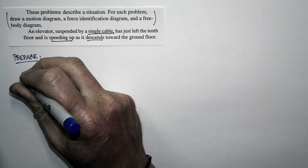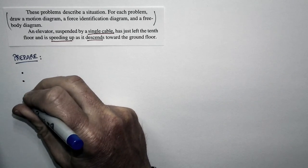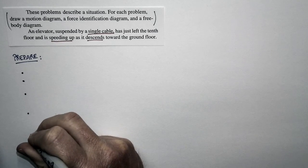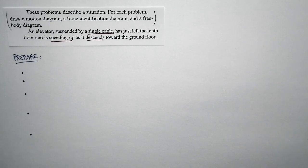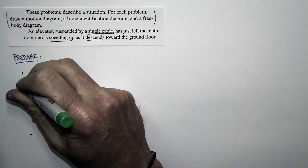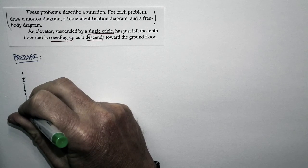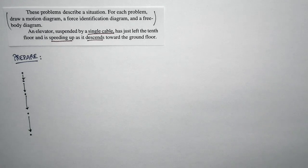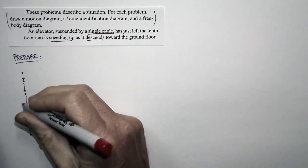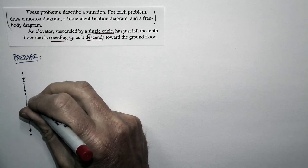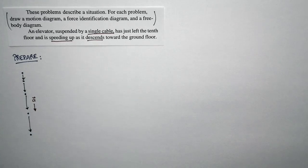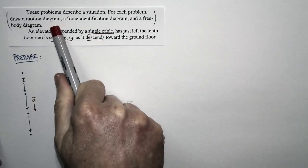Okay, the elevator is moving downward. But more importantly, when we're considering forces, is this: It's speeding up as it goes. So in each interval of time, it's going to travel a greater and greater distance. The velocity vectors are going to get bigger and bigger. And so that tells us that the acceleration is directed downward. The acceleration vector is directed vertically downward. That's our motion diagram.